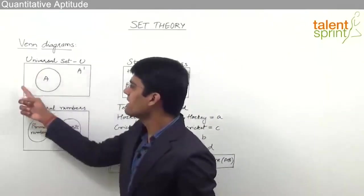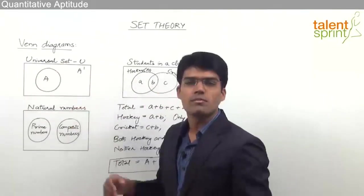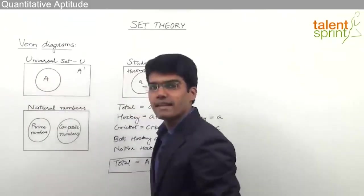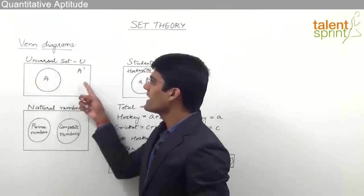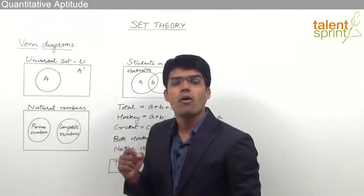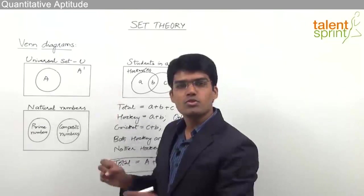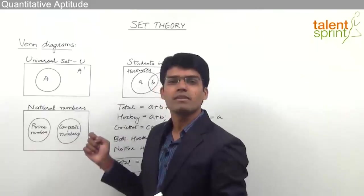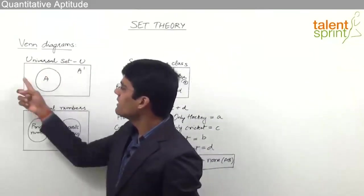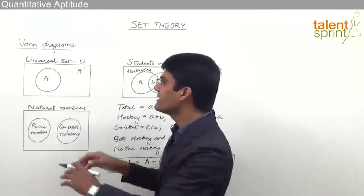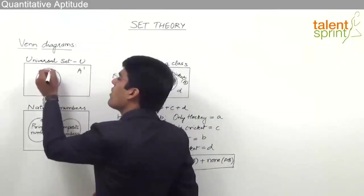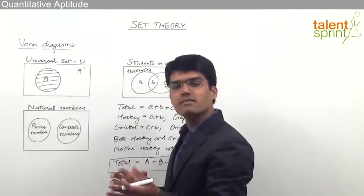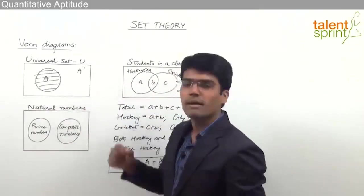As you can see in the first diagram, the rectangle shows the universal set — the complete set or total number of elements — and any subset is represented by a circle inside the rectangle. Whatever comes within the circle are elements belonging to set A. The remaining part of the rectangle is shown by A′, read as A complement, which shows all those elements that belong to the universal set but are not part of set A.